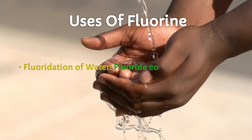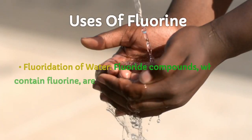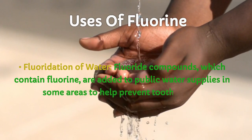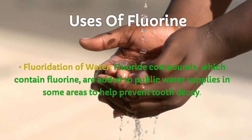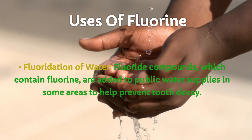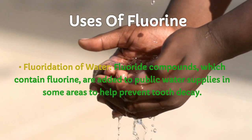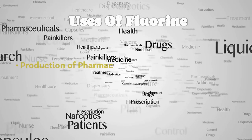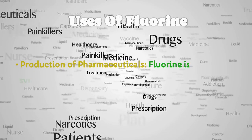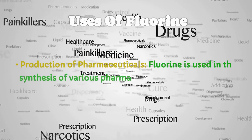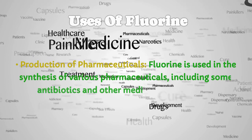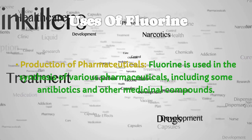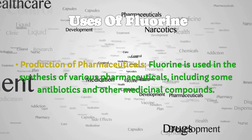Fluoridation of Water: fluoride compounds, which contain fluorine, are added to public water supplies in some areas to help prevent tooth decay. Production of Pharmaceuticals: fluorine is used in the synthesis of various pharmaceuticals, including some antibiotics and other medicinal compounds.